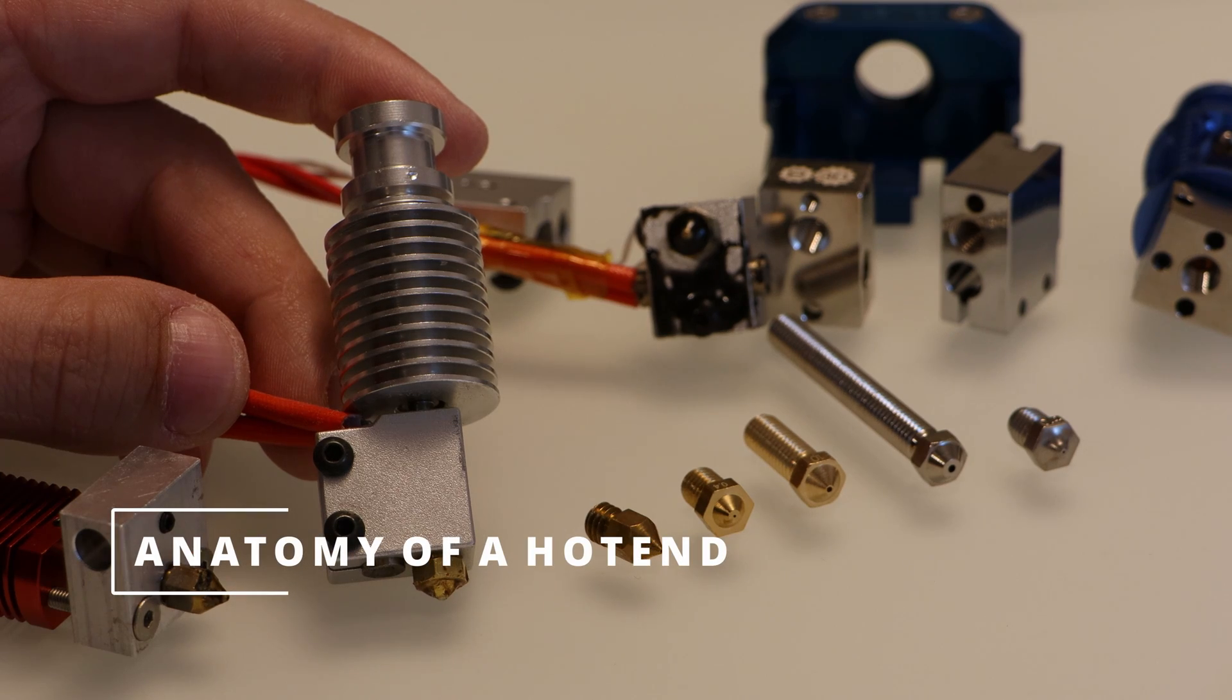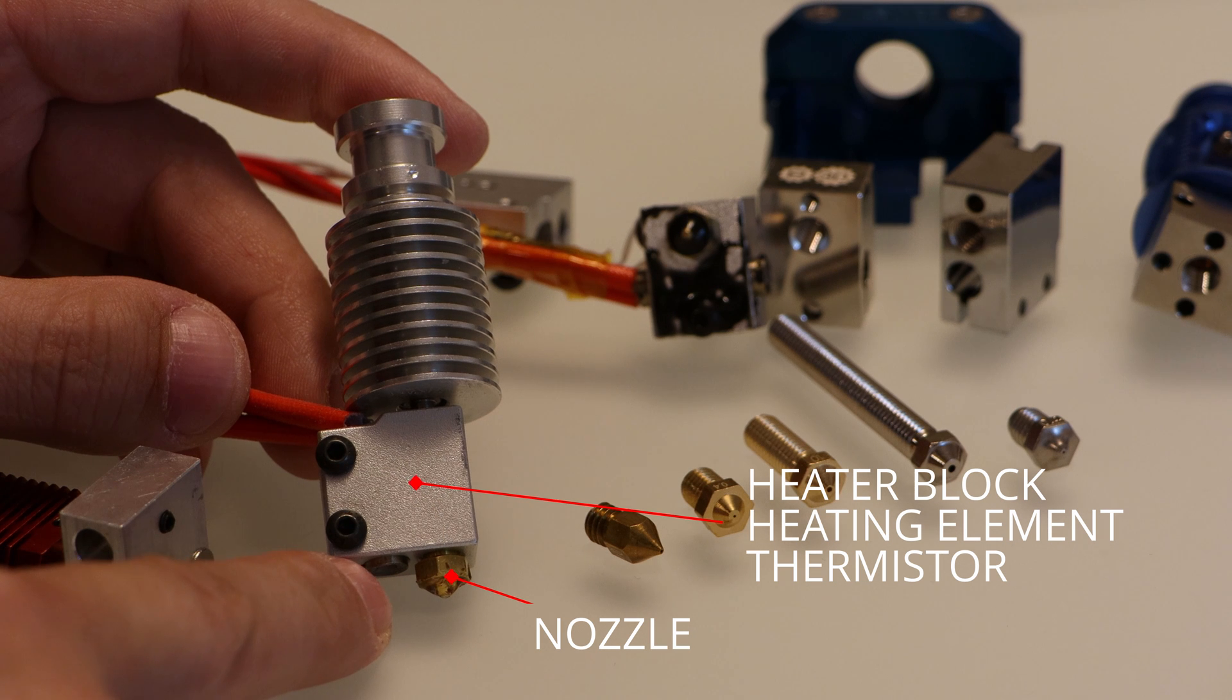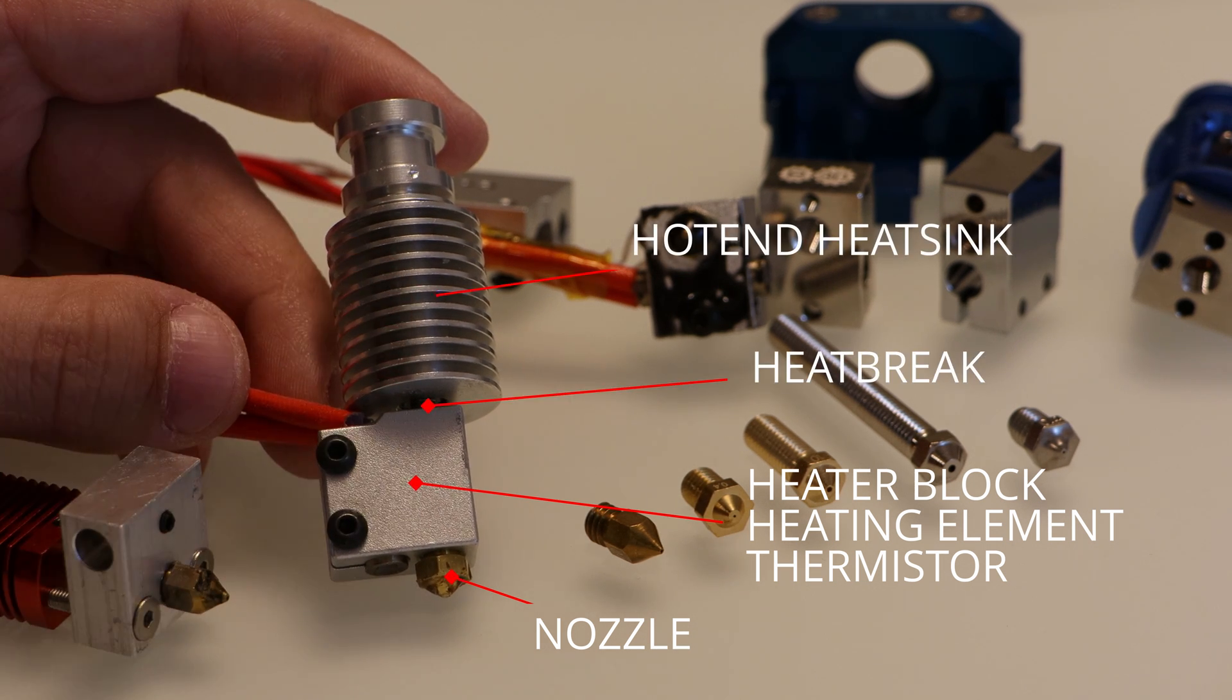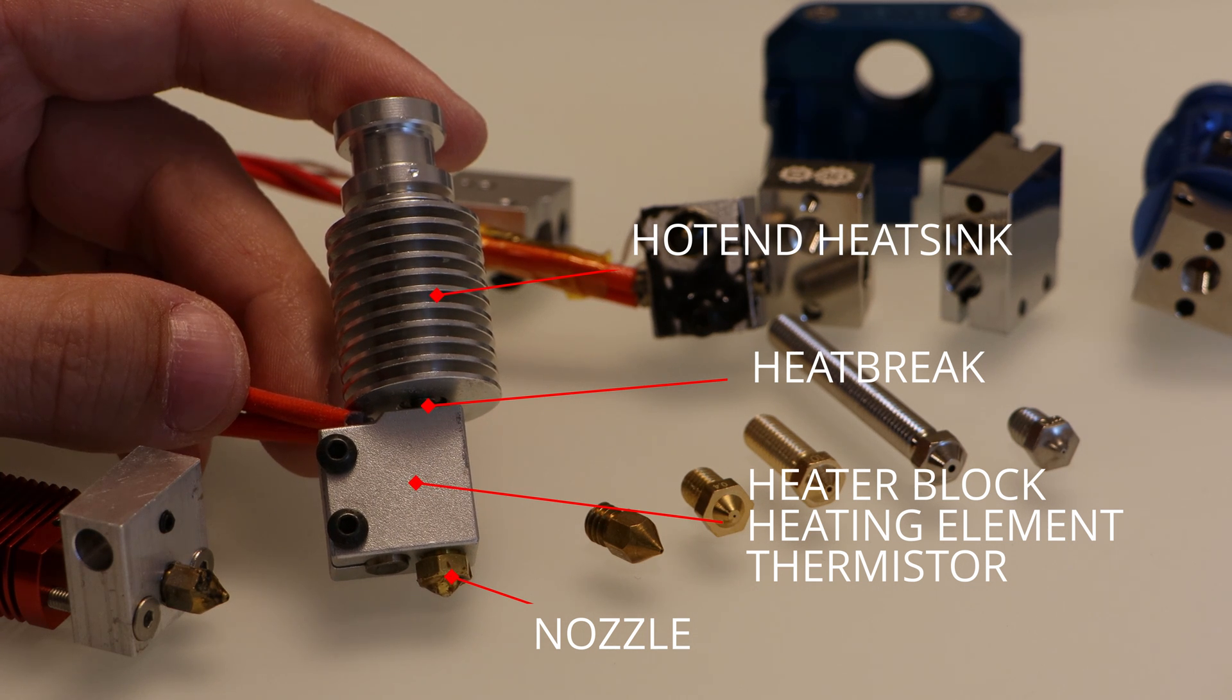All 3D printer hotends are composed of six basic parts. You have the nozzle, the heater block, the heating element, the thermistor, the heat break, and the hotend heat sink. Now let's go over each component and explain how it functions, some different design variations, and why you might choose one design over another.